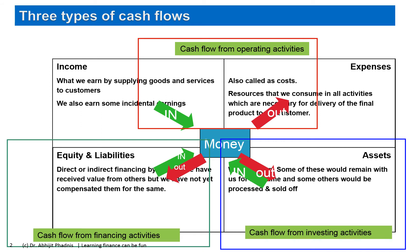There are three pairs — one inflow and one outflow each. The upper pair is cash flow from operating activities, because the inflow is related to income — the money we collect from customers — and the outflow is what we pay to vendors. Naturally, this is what happens in day-to-day operations.